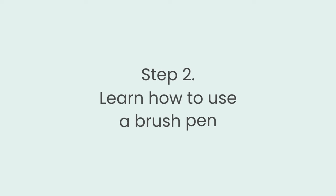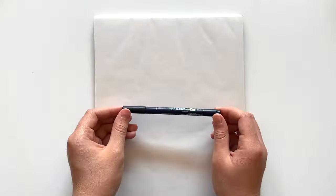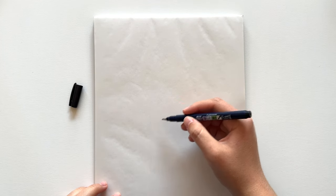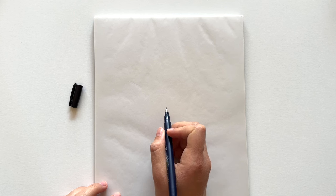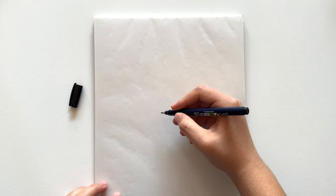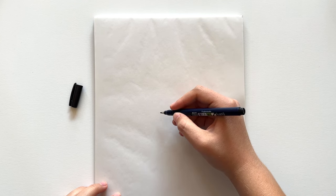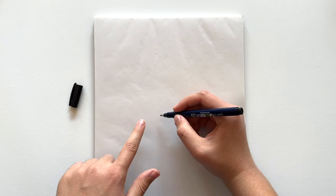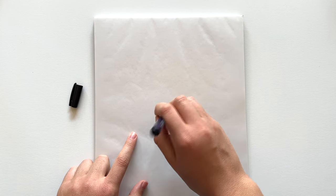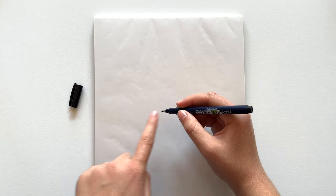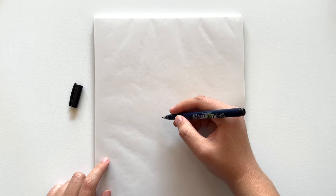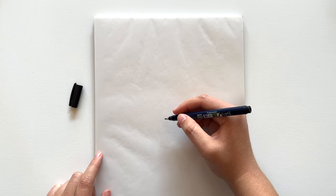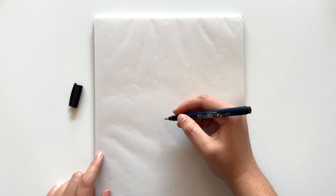So once you've got a brush pen you just want to make sure you're holding it correctly. You want to hold it to the side of what you're writing like this. Don't hold it below or anything like that, just hold it to the side. And then you also want to make sure you're holding it at about a 45 degree angle to the paper like this. Don't hold it too straight up and down. Feel free to angle the paper any way you need to to make it more comfortable for you.